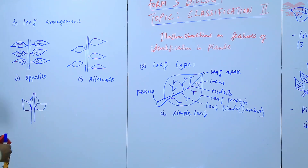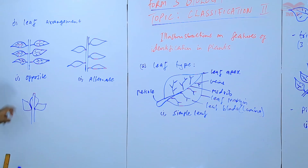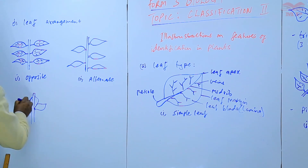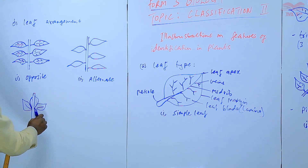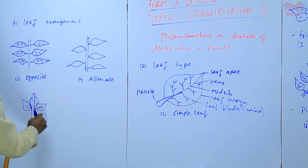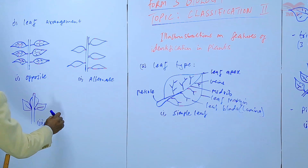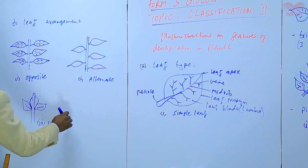The third type of leaf arrangement is where we have leaves emerging from the same spot — one to the left, one to the center, and one to the right. We refer to this as the whorled arrangement.